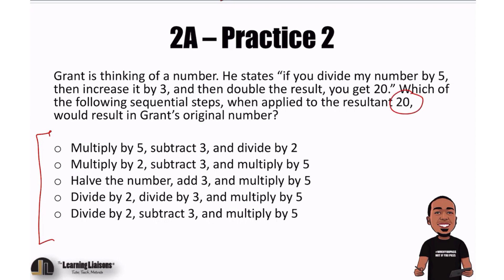I'm going to start with 20. I'm going to look at his steps. I got 20. Then the last step was double the result. What's the opposite of doubling something? First off, we need to know what doubling means in terms of our operations. Doubling means multiplying by 2. Therefore, the opposite would be dividing by 2.